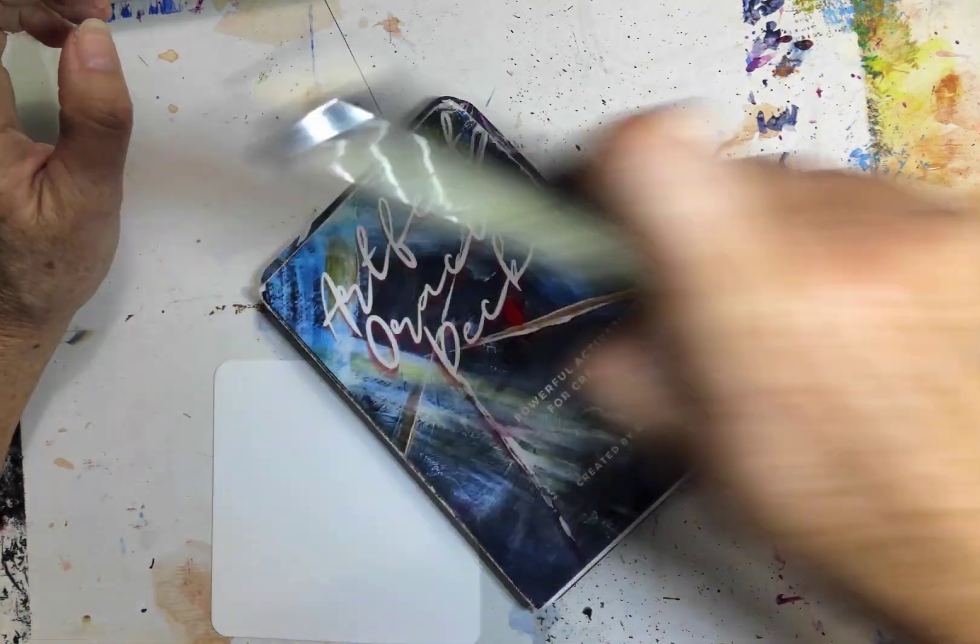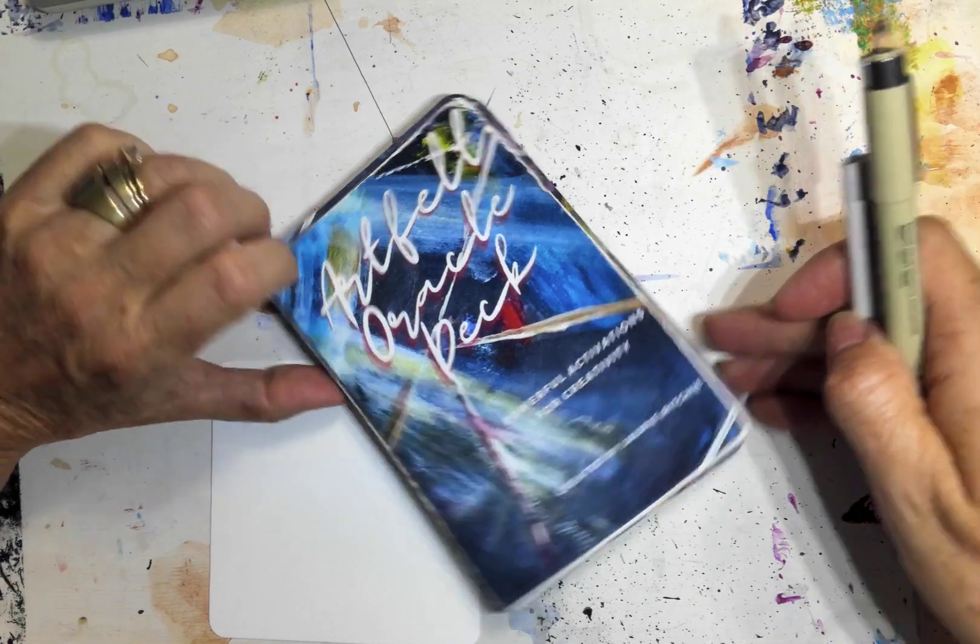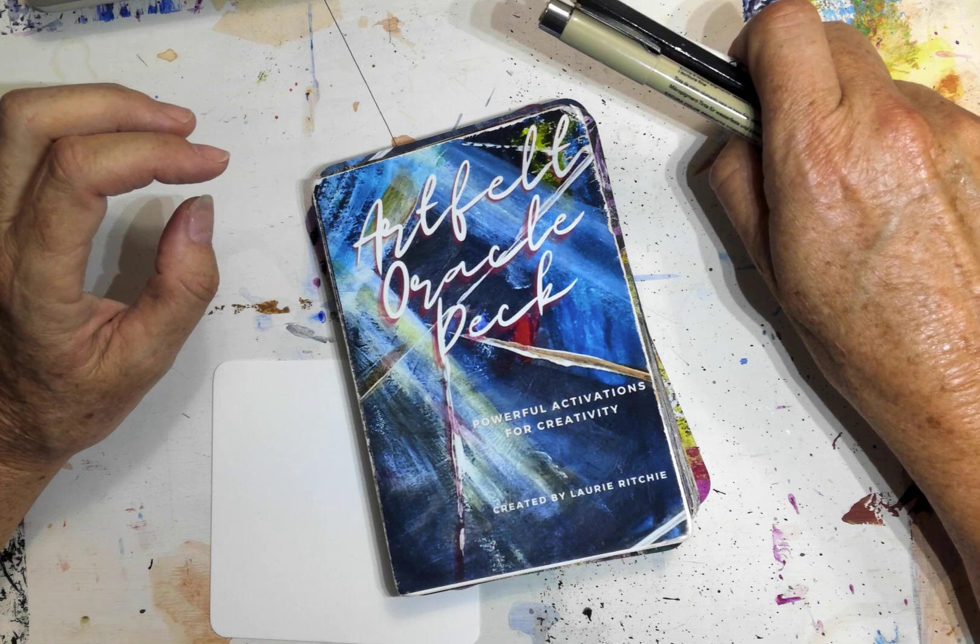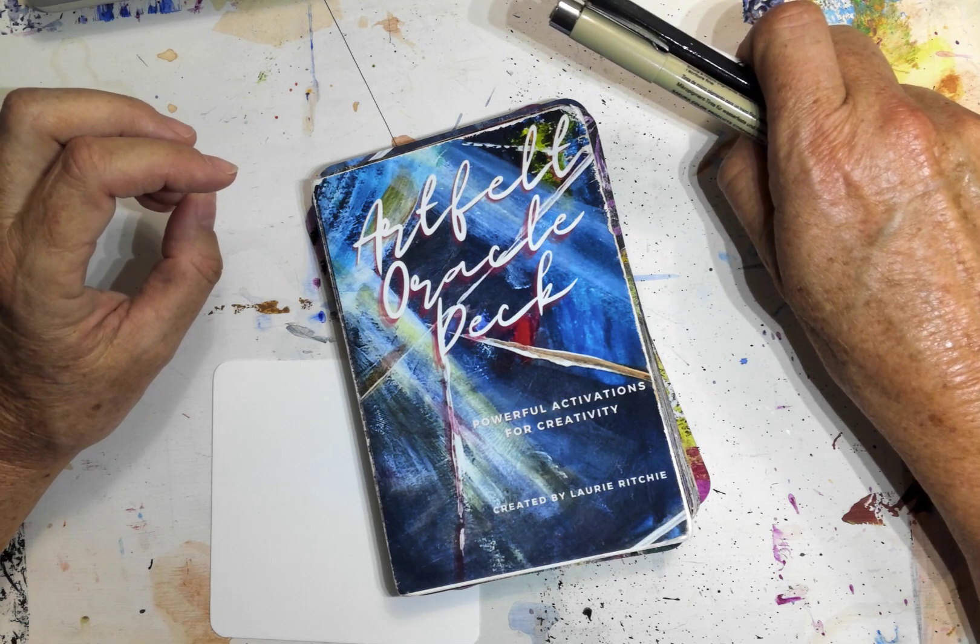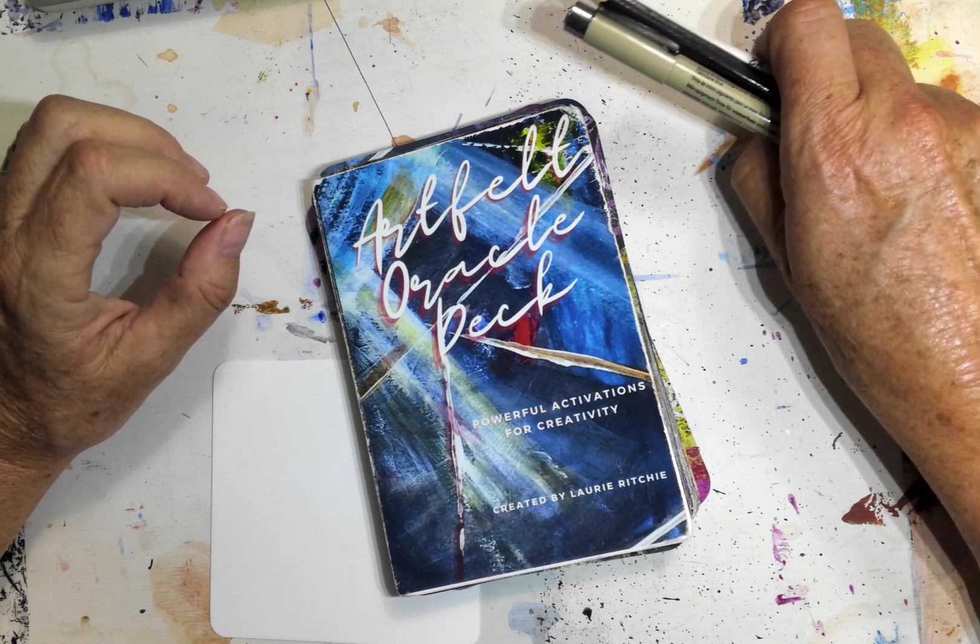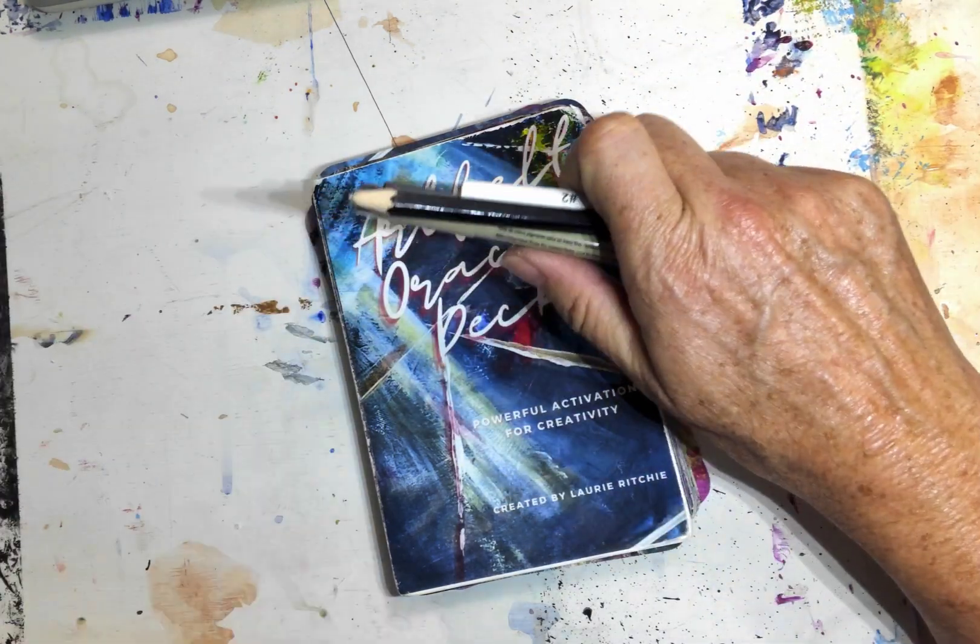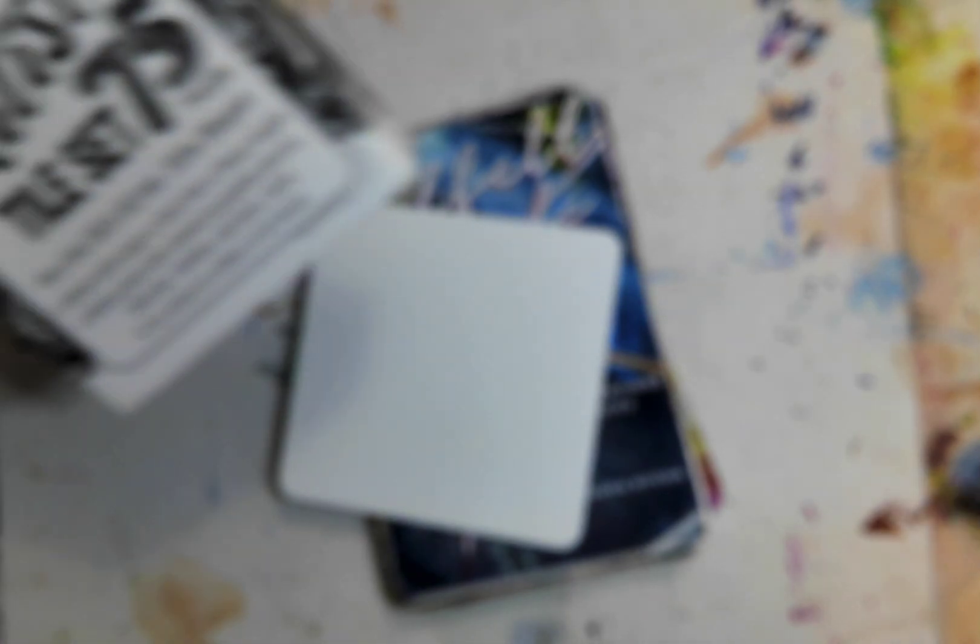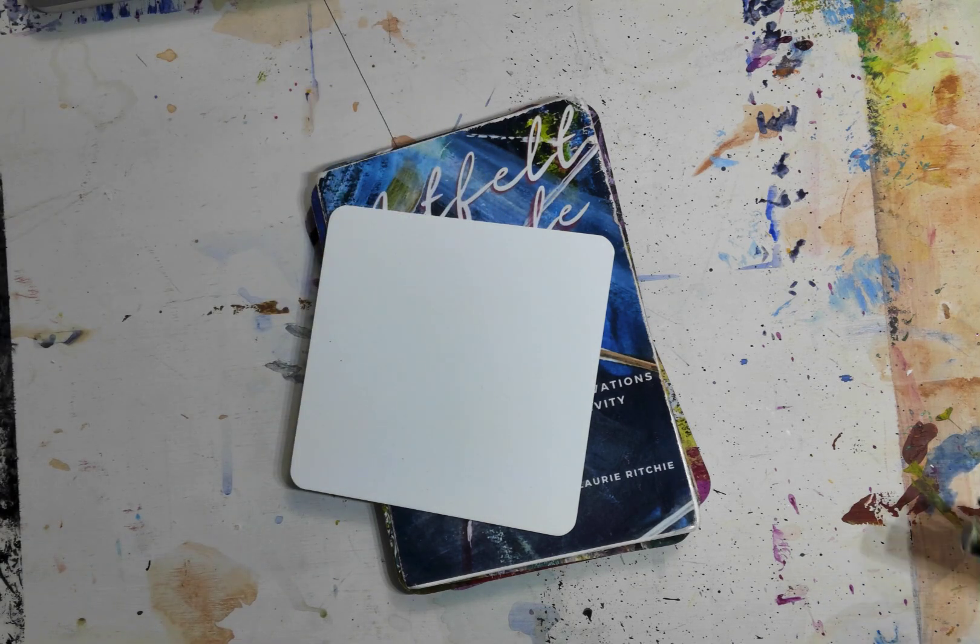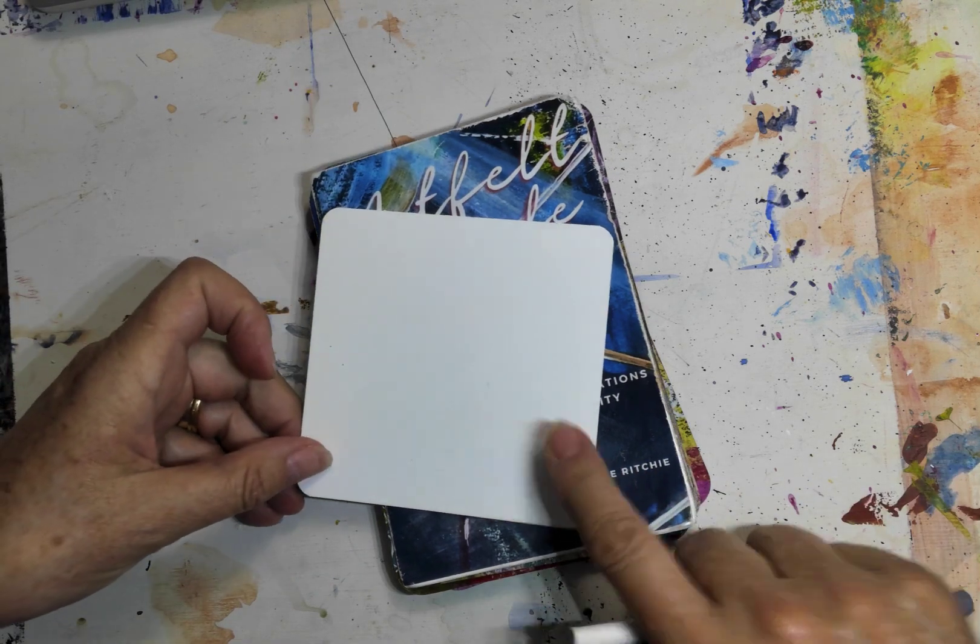As always, we will be using my Artfelt Oracle Deck, which you can purchase from WholeArtsConnection.com. That's W-H-O-L-E ArtsConnection.com. And I'm using a 4-inch tile, which you can use. I bought these on Amazon really inexpensively, but you can also just cut it out of typing paper.